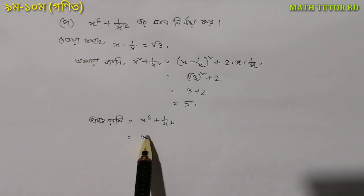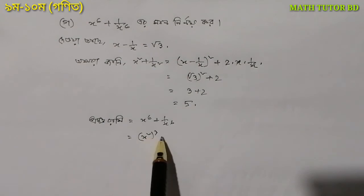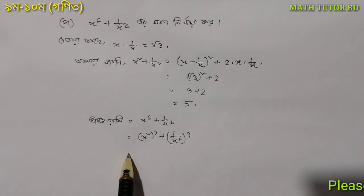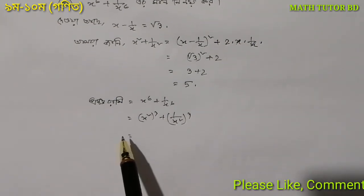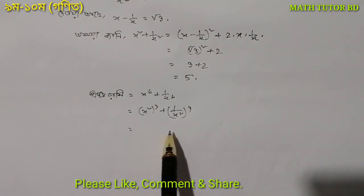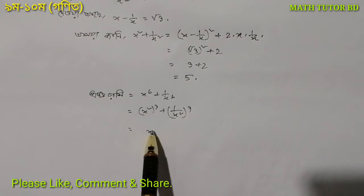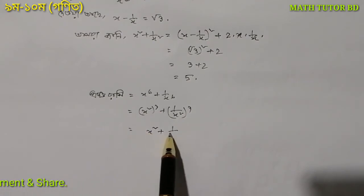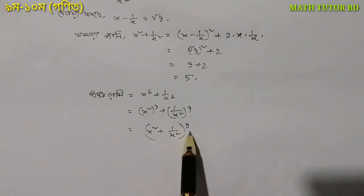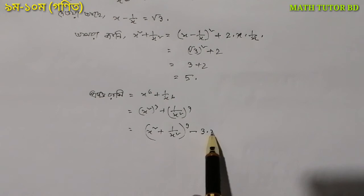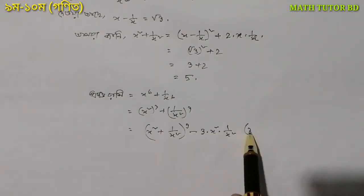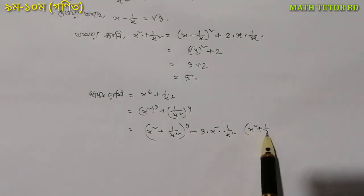Now for x² to the power 6 plus 1 by x² to the power 6, we use x² whole cube plus 1 by x² whole cube. Using the identity a cube plus b cube equals a plus b whole cube minus 3ab, where a is x² and b is 1 by x², and ab is x² into 1 by x² equals 1. So we get x² plus 1 by x² whole cube minus 3 into x² plus 1 by x².